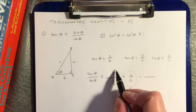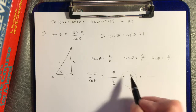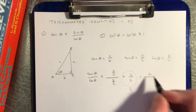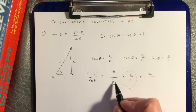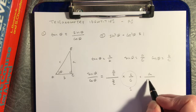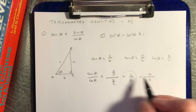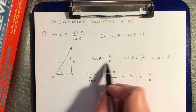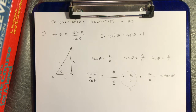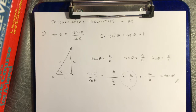So A over C times C — the C's divide out and I'm left with A. Same story on the bottom: B divided by C times C leaves me with B. And A over B is equal to the tangent of my angle theta, which is what I wanted. There's the proof.